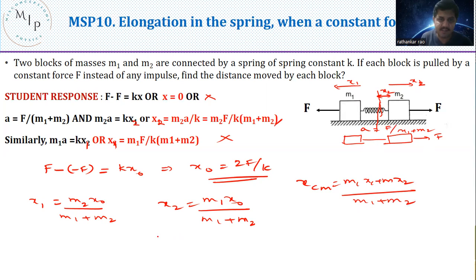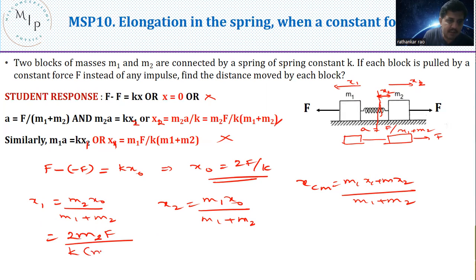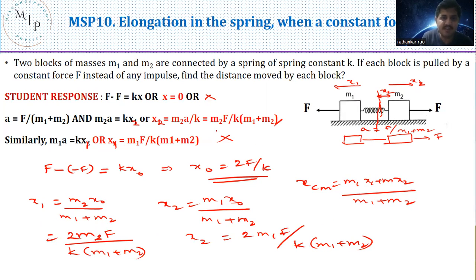Substituting x₀ = 2f/k into the expressions: x₁ = 2·m₂·f / [k·(m₁ + m₂)] and x₂ = 2·m₁·f / [k·(m₁ + m₂)]. So both previous student solutions are incorrect. The right approach is to use the center of mass concept to find x₁ and x₂ from the total extension x₀.